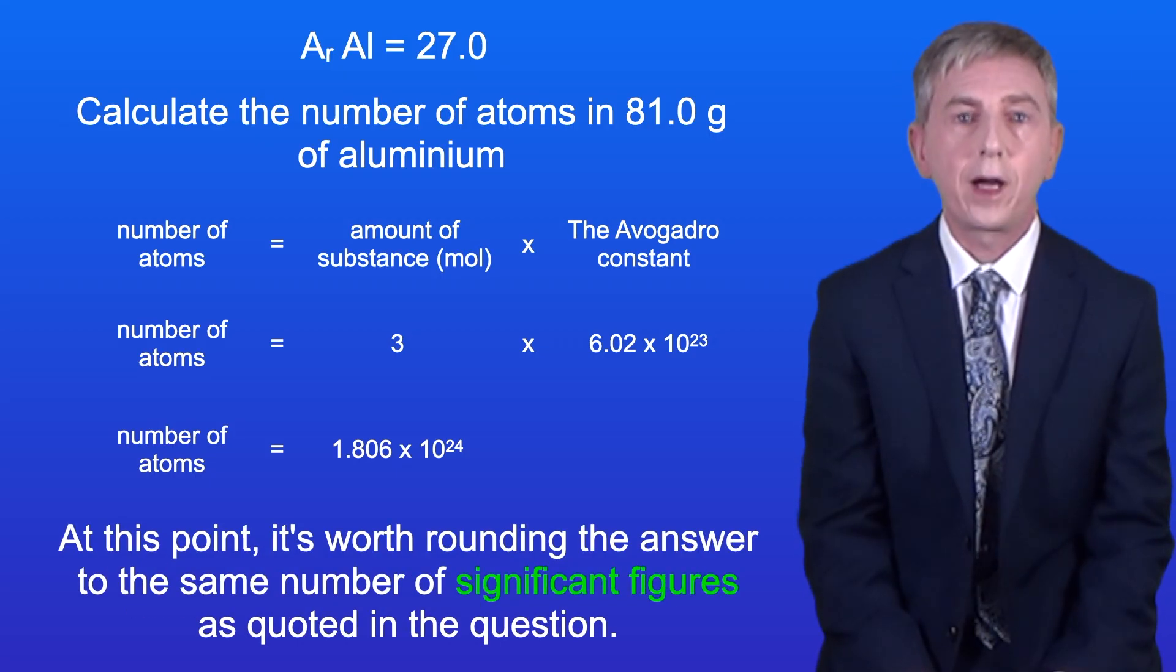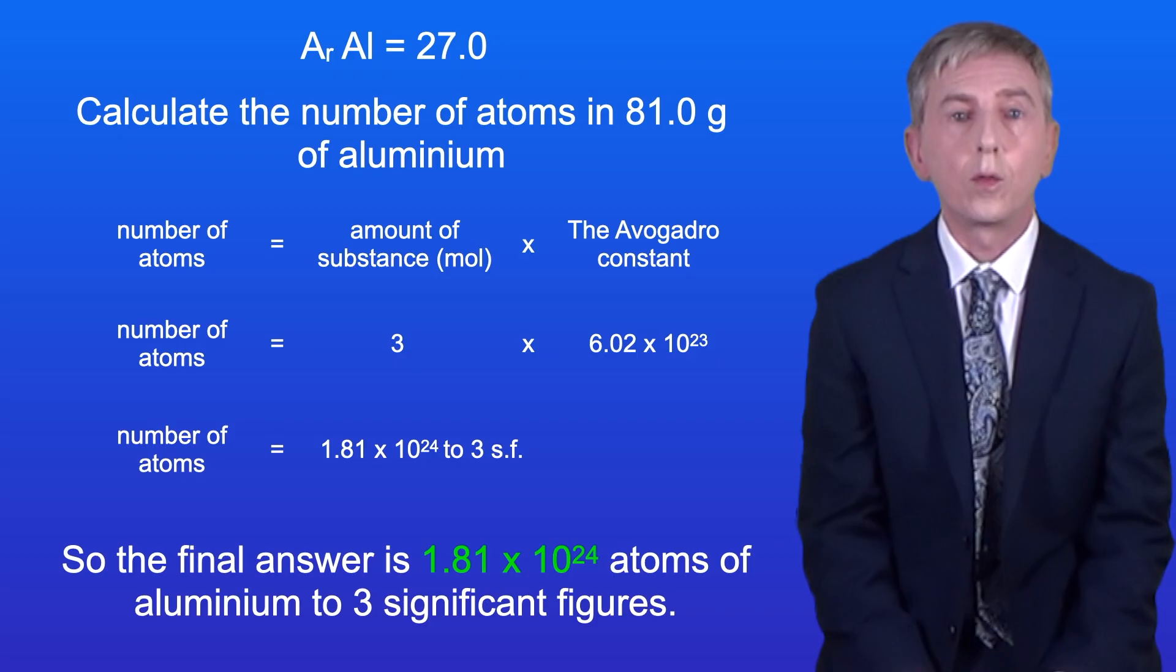Now at this point it's worth rounding the answer to the same number of significant figures as quoted in the question. So the final answer is 1.81 times 10 to the power of 24 atoms of aluminium to three significant figures.